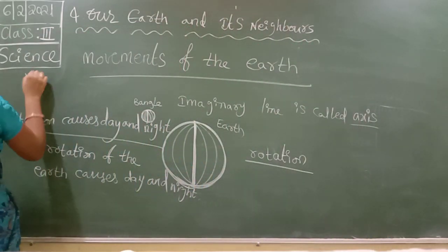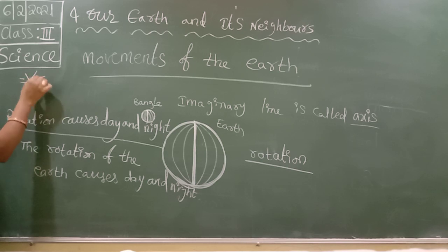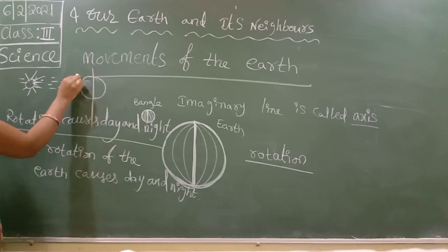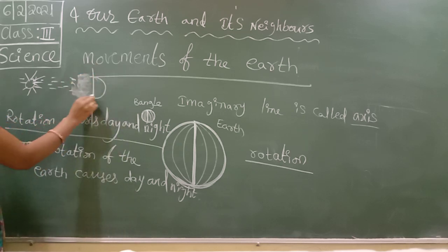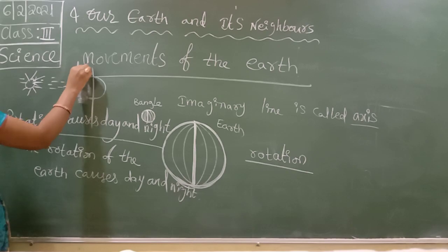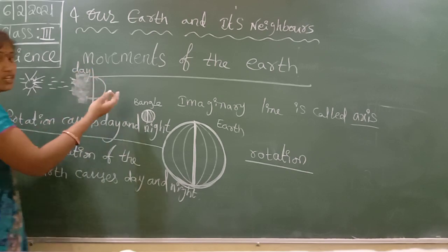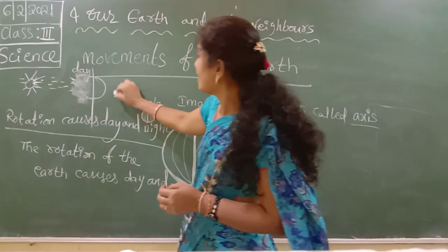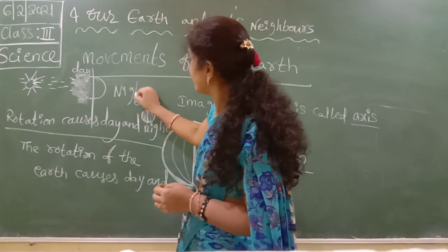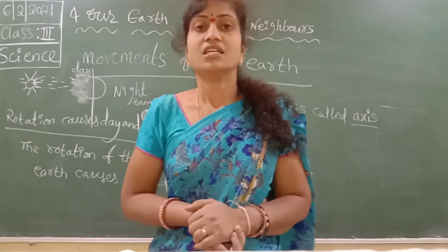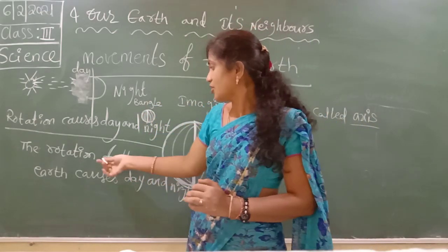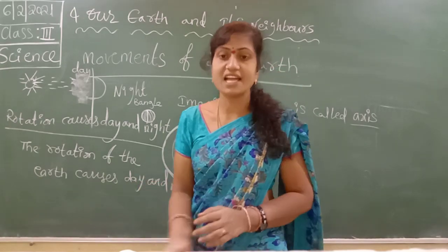The sun's rays fall on only half of the Earth — that half has day. The remaining half where sun rays do not fall — that is the night. The Earth rotates on its axis. The rotation of the Earth causes day and night.